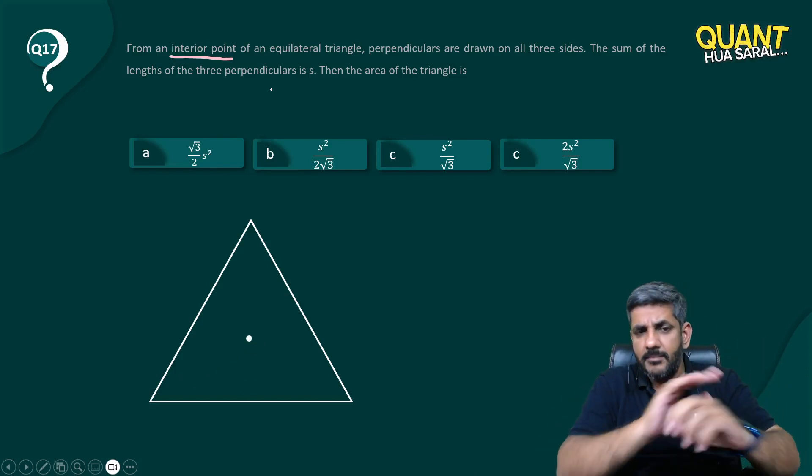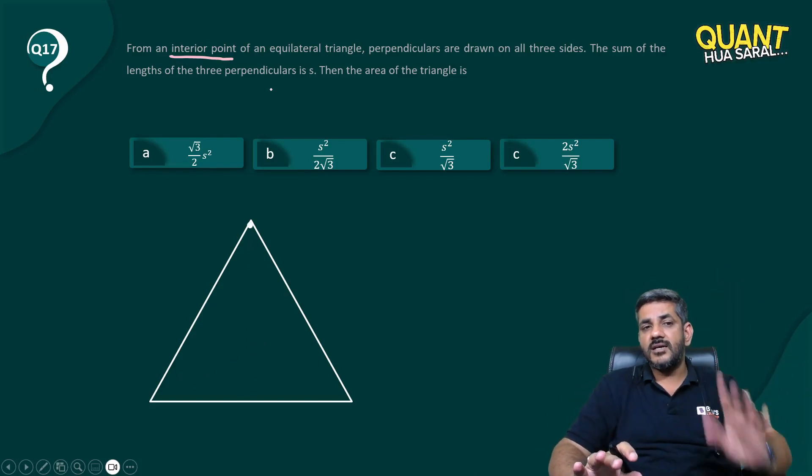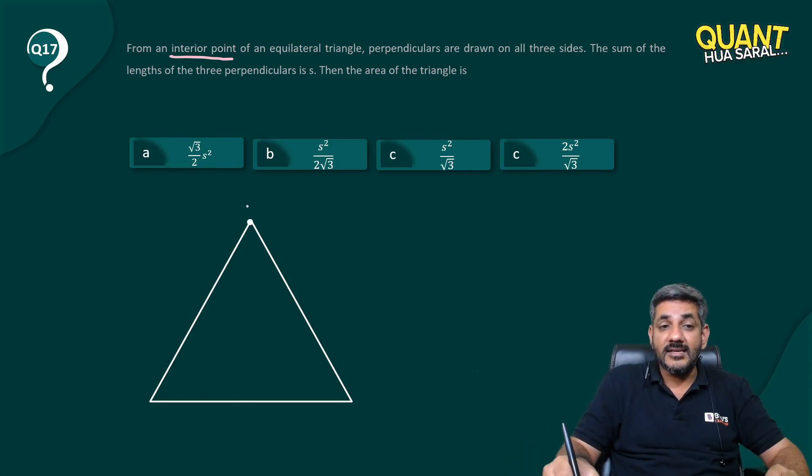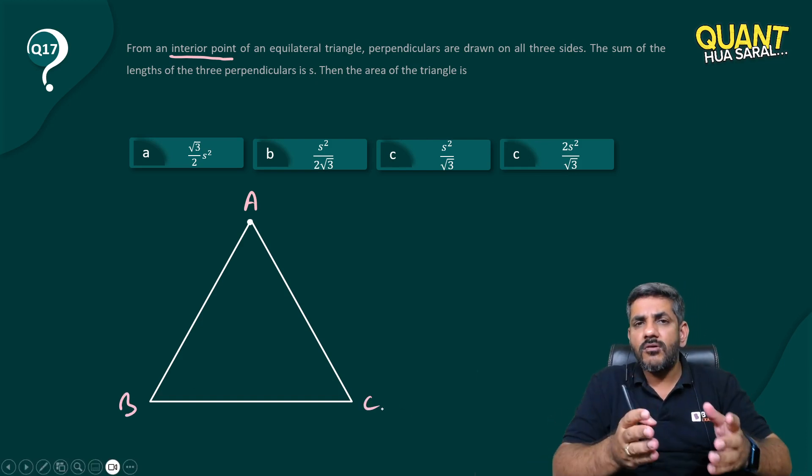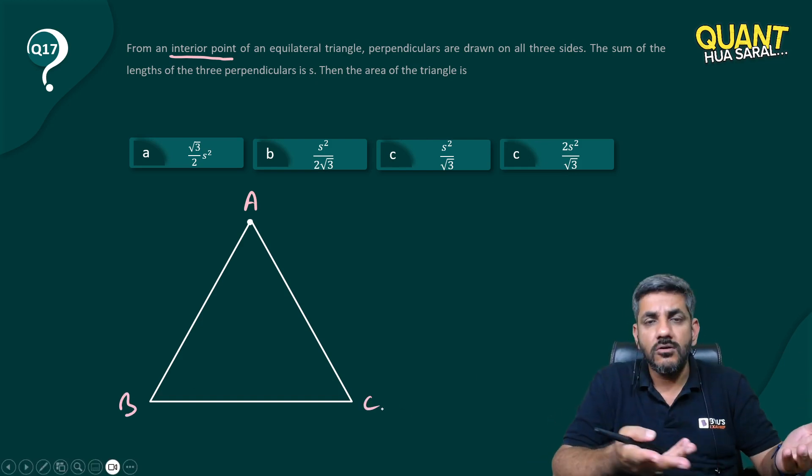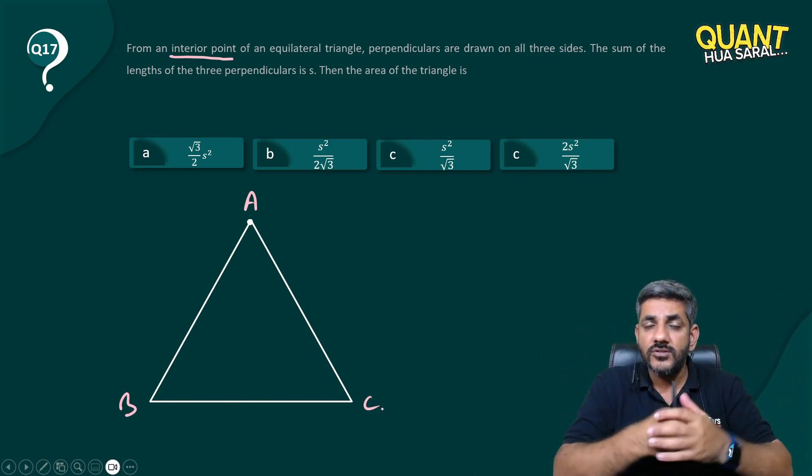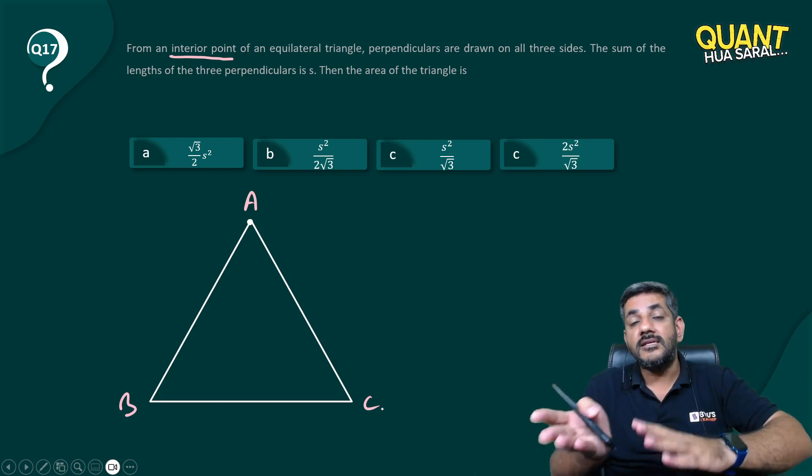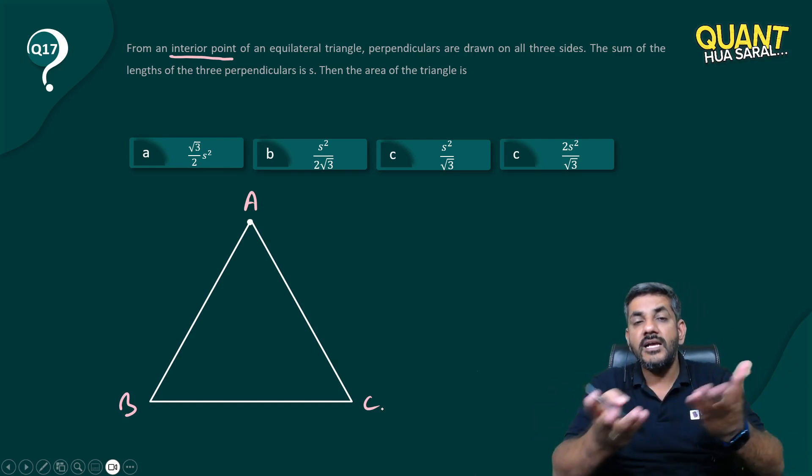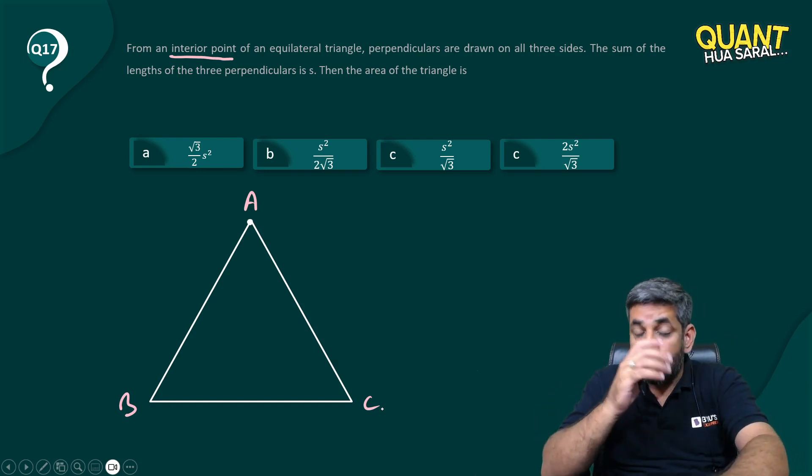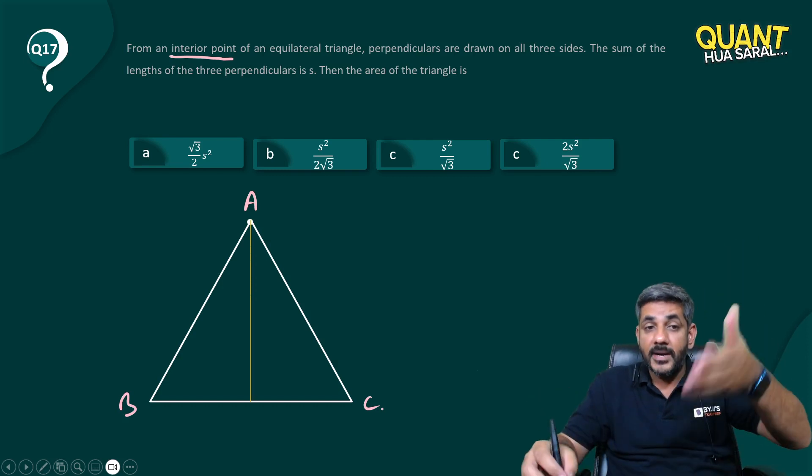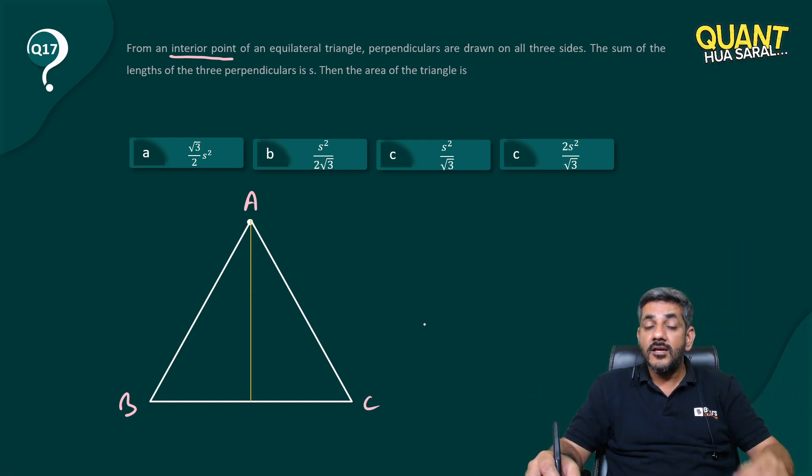So it can be anywhere. I am choosing it at that vertex. Why? Suppose the triangle is A, B, C. What is the perpendicular from this point on AB? Zero, because ultimately the point lies on that line AB. What is the perpendicular from this point on AC? Zero, because the point lies on AC. So what is the only perpendicular left? It is the perpendicular from A on BC.